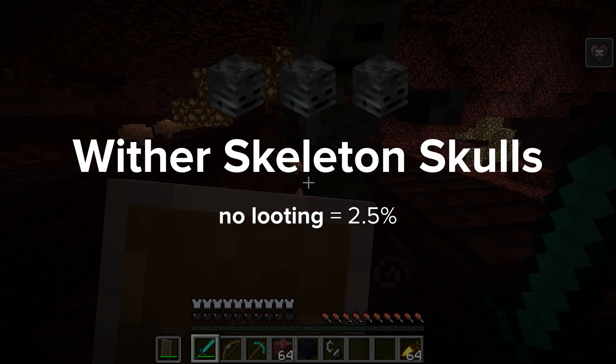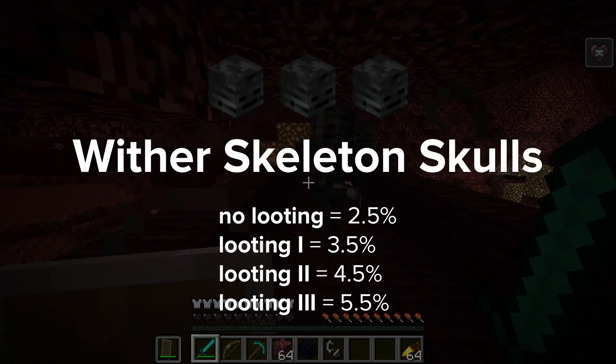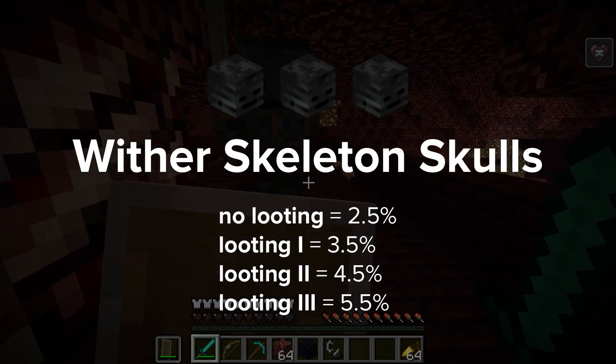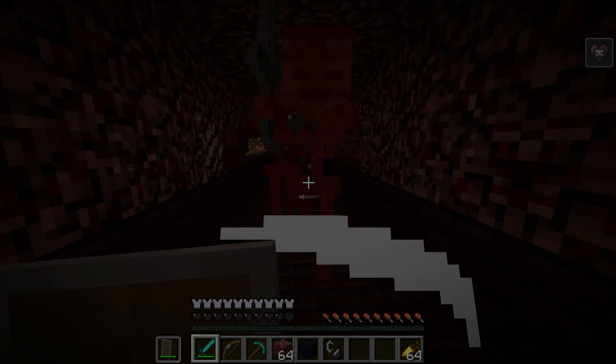If you have looting enchantment on your sword, the drop rate increases by 1% for each level of looting you have. So if you have looting 3 on a sword, your chances are over 2 times as good as a sword with no looting.